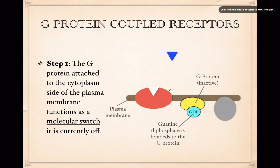This receptor protein is embedded in the plasma membrane — part of it facing out and part facing in. This protein, called the G-protein, is attached to the cytoplasm side of the plasma membrane, along with another enzyme molecule. The G-protein is currently in its inactive form and is going to function as a molecular switch. It's turned off, but we're going to turn it on by changing GDP — guanine diphosphate — to GTP, similar to the way ADP becomes ATP.